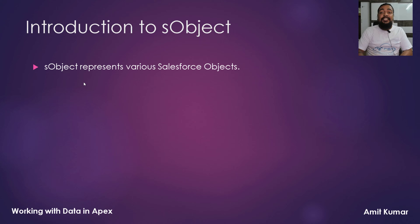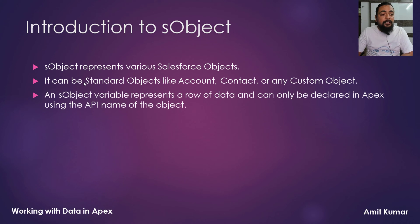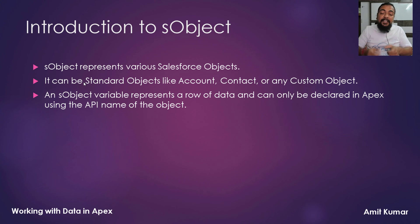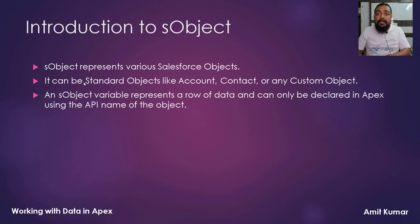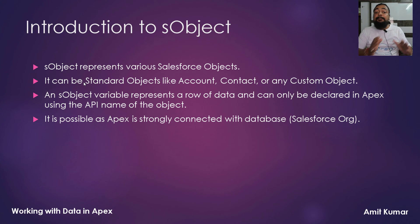S-Objects represent various Salesforce objects. It can be a standard object like Account, Contact, or any custom object that we have created in Salesforce. An S-Object variable represents a row of data, so we can create a variable of this S-Object type and that variable can represent a specific record. For example, if we create a variable of the Account object, that variable can hold a record of Account. When declaring an S-Object variable, we have to use the API name of that Salesforce object.